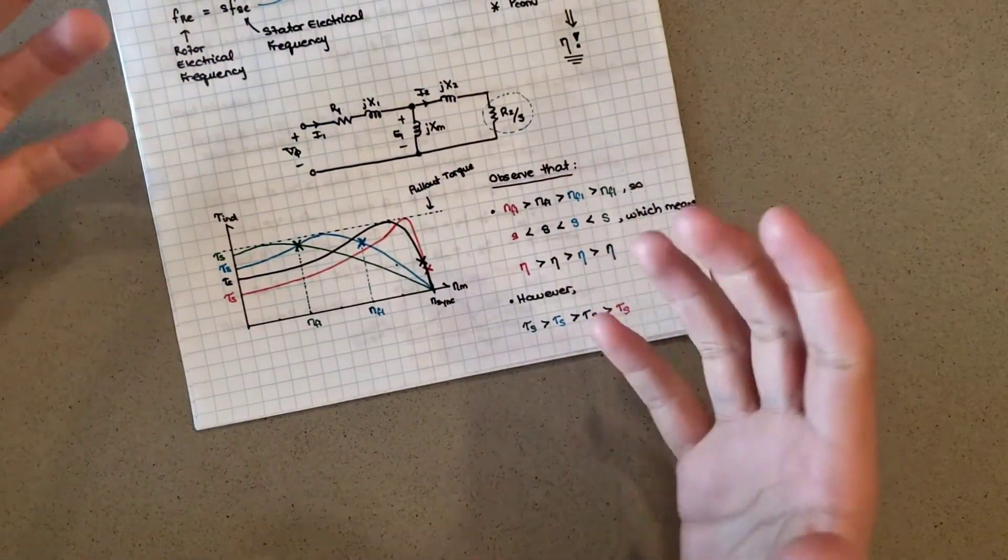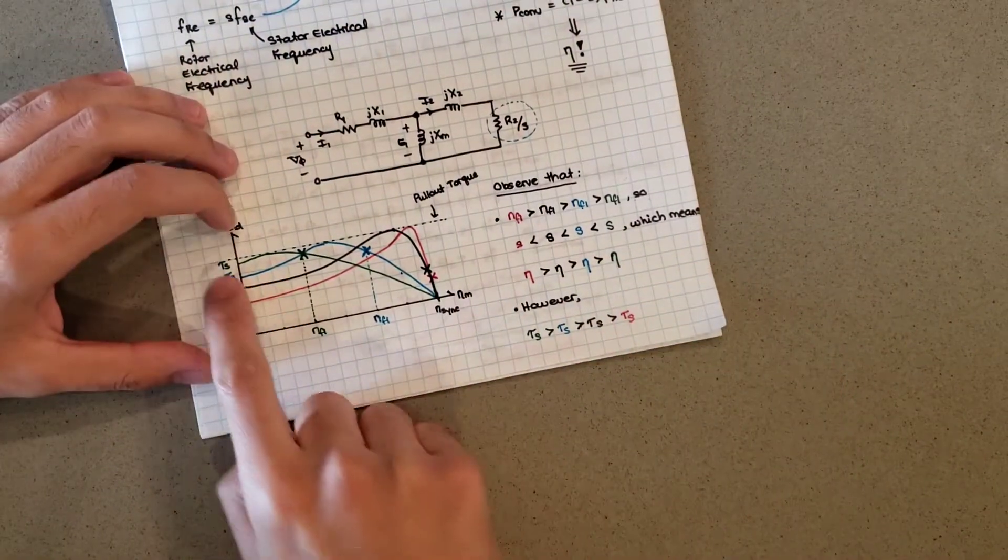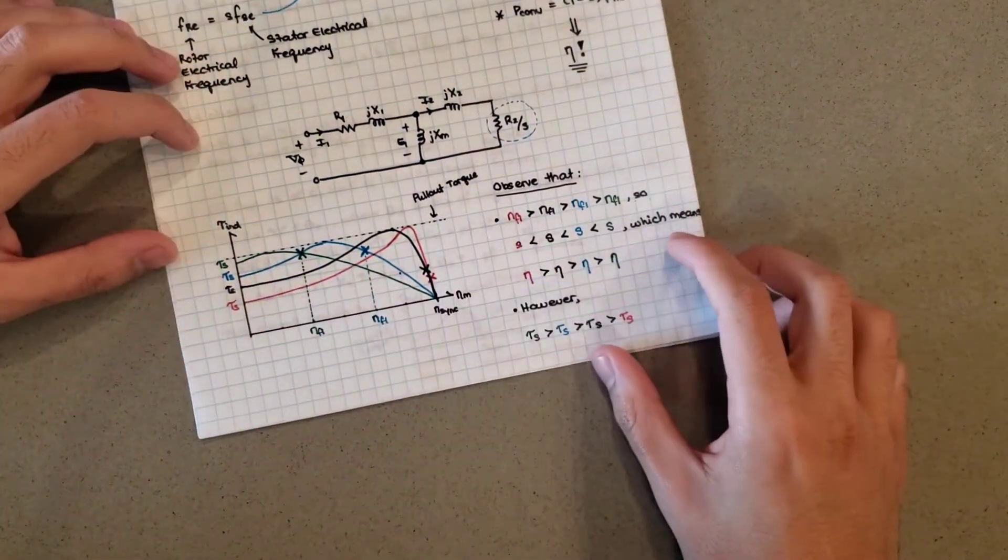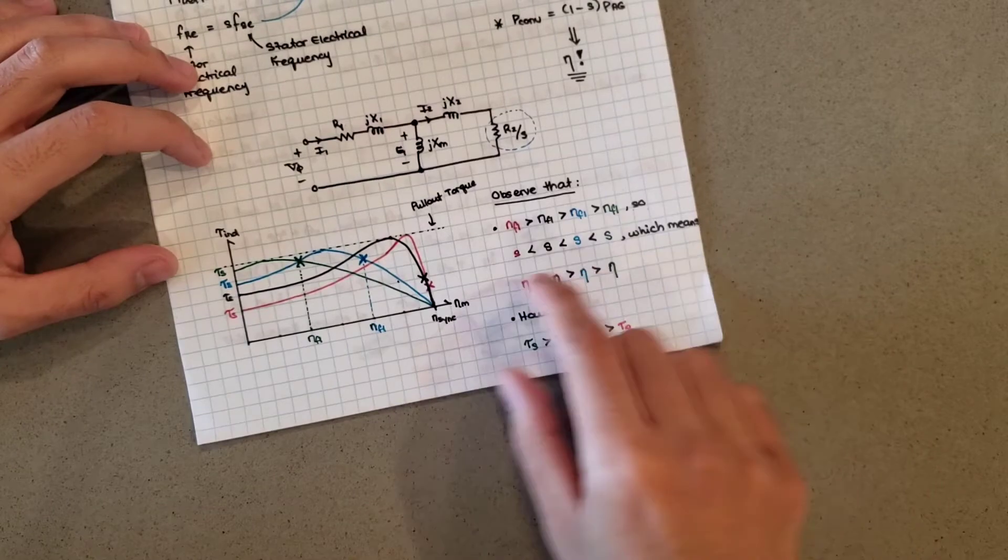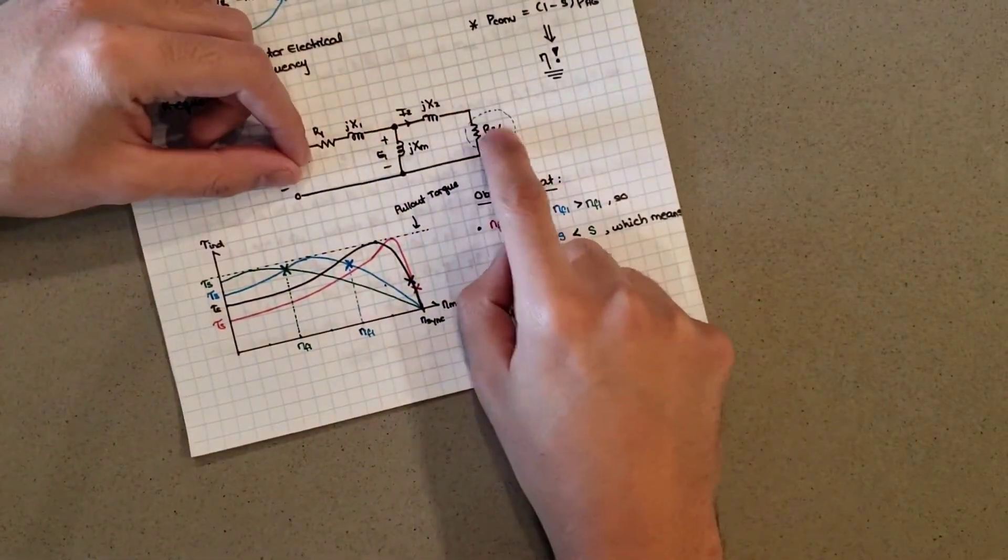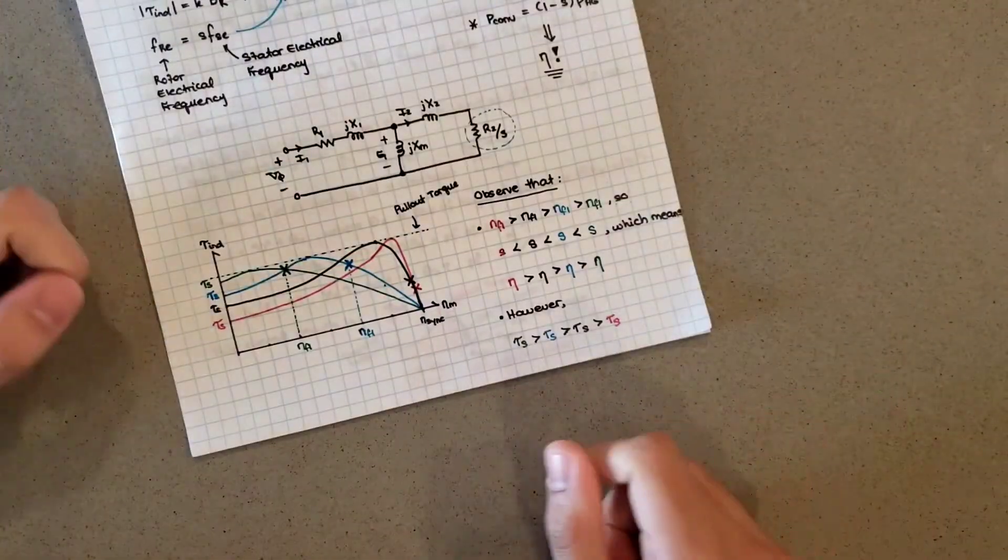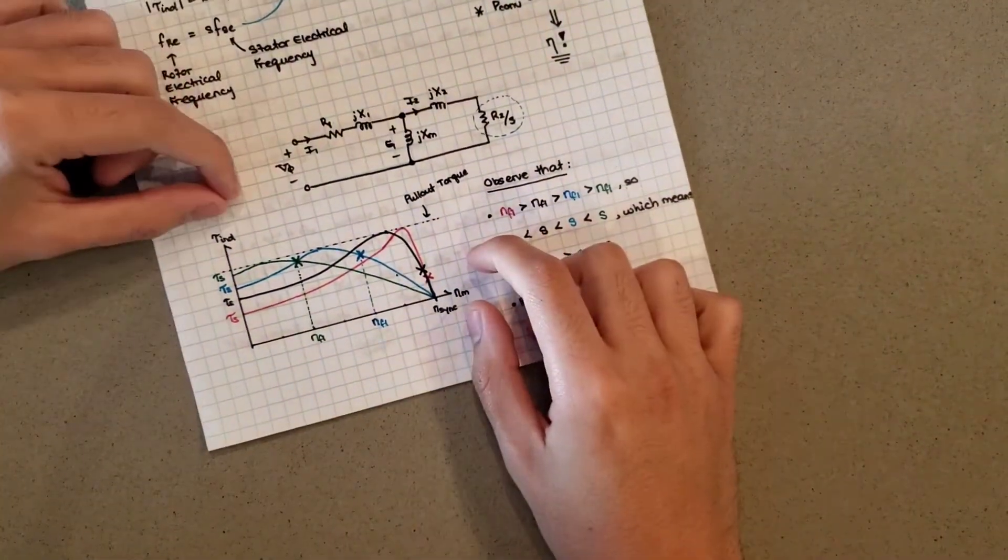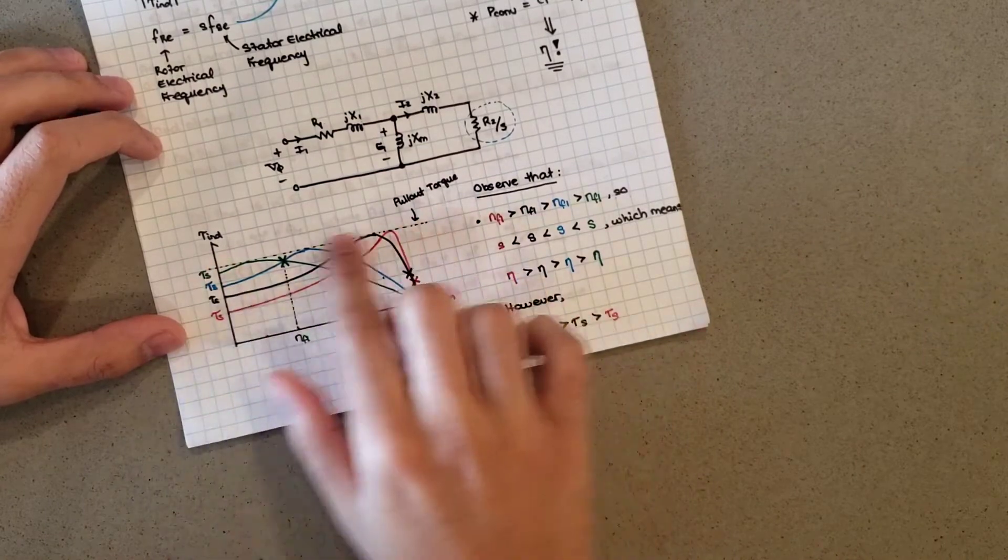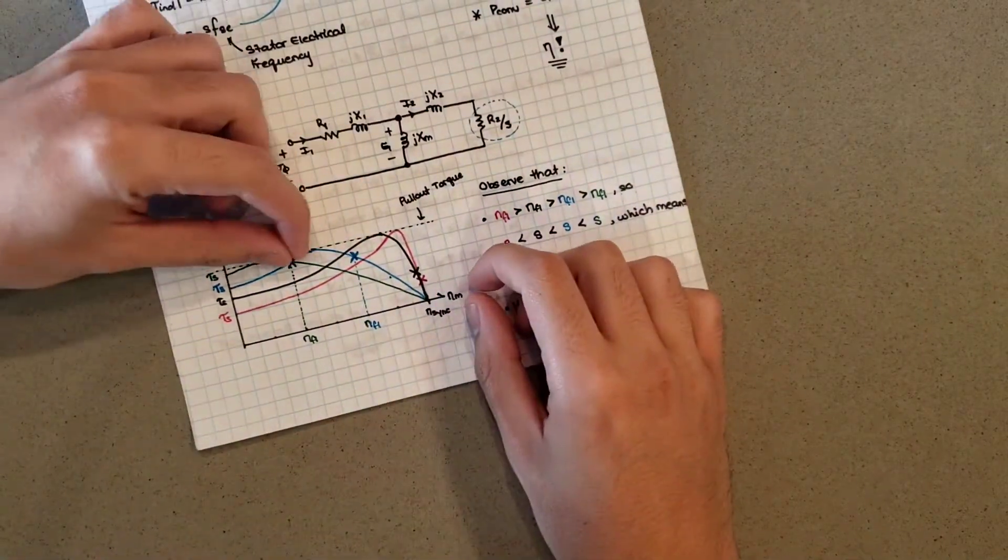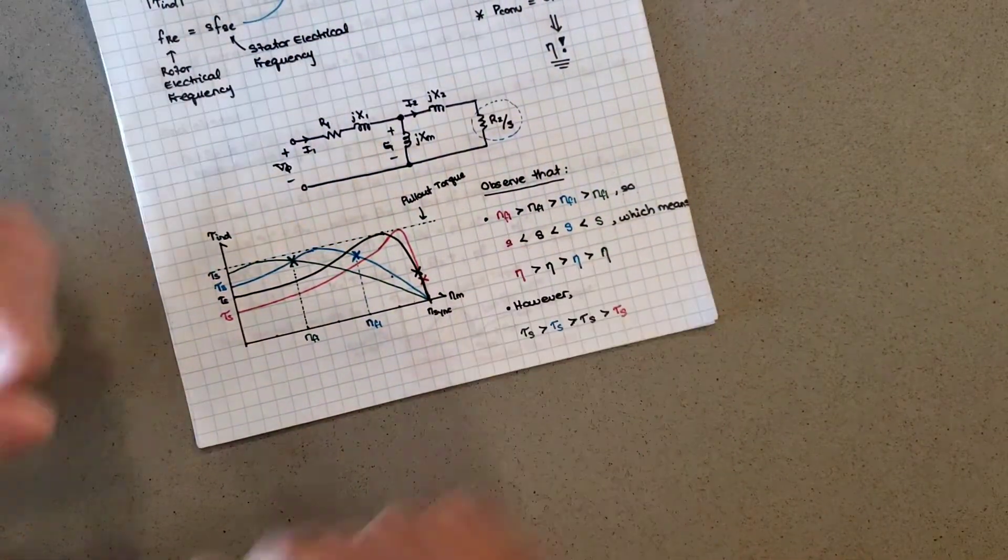However, what if I wanted my motor to have a high starting torque because of whatever load it has? Then I could go ahead and change the resistance of its rotor, either by putting resistors directly in there or by some other means. I will keep the pullout torque the same - its maximum torque capabilities are the same - but I can shift its torque-speed curve to the left a little where that peak occurs.